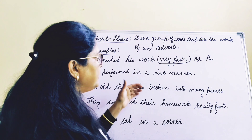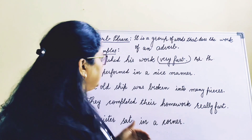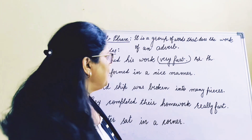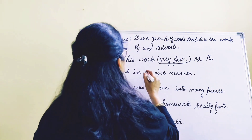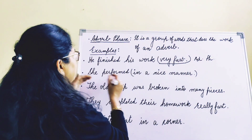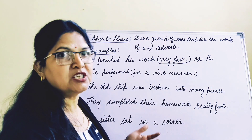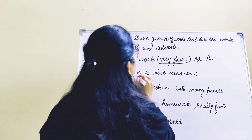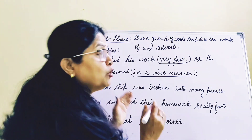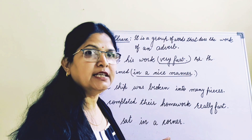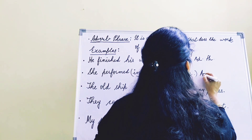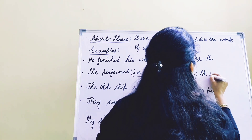Second example: 'She performed in a nice manner.' If I say 'she performed nicely,' nicely is an adverb. But nicely can also be said as 'in a nice manner.' She performed how? In a nice manner. So 'in a nice manner' is a group of words working as an adverb — it is an adverb phrase.